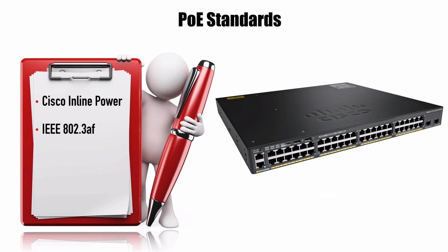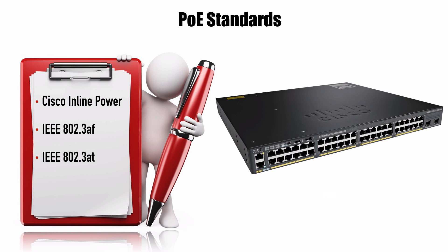As time went on, another standard came out — 802.3at — which can provide a maximum of 30 watts of power. Your Cisco Catalyst switches may support a subset of these standards, so check your switch's documentation. At the time of this recording, the most recent entry into the PoE standards field is IEEE 802.3bt, which can give us a whopping 100 watts of power.